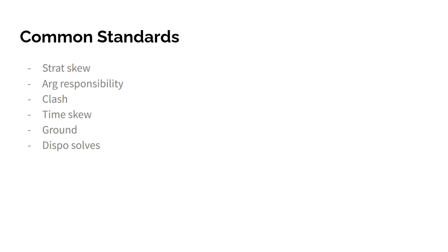Argument responsibility is another very common standard. This is about how the negative is no longer responsible for their arguments, and it incentivizes them to develop their arguments to a much smaller degree, allowing them to get away with poorer arguments — because they can just kick out of them in the 2NR or later in the debate. For these reasons, it encourages poor argumentation, poor responsibility with argumentation, which all lead to bad models of debate.